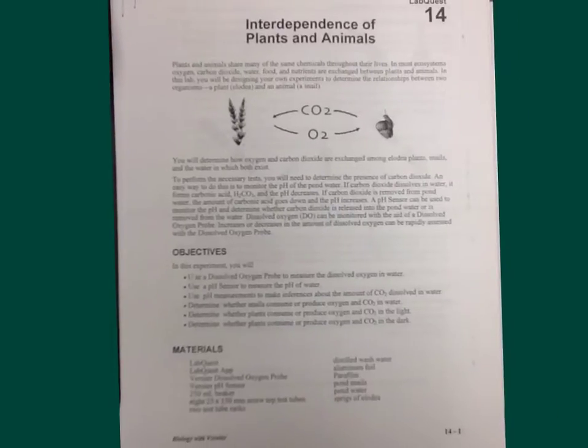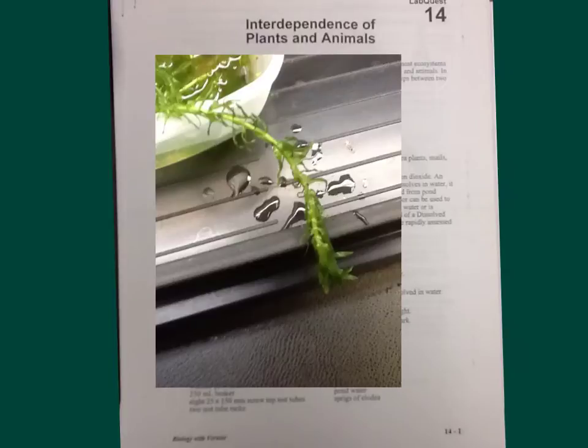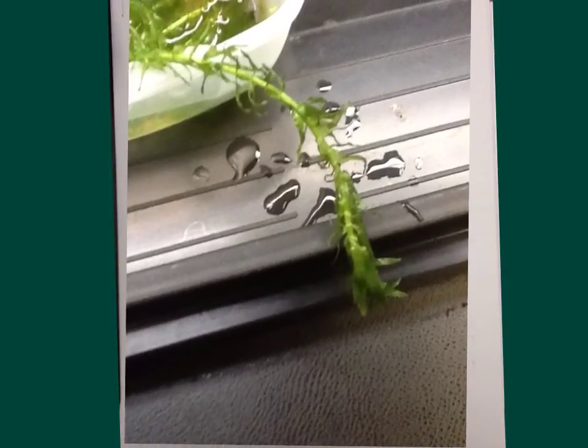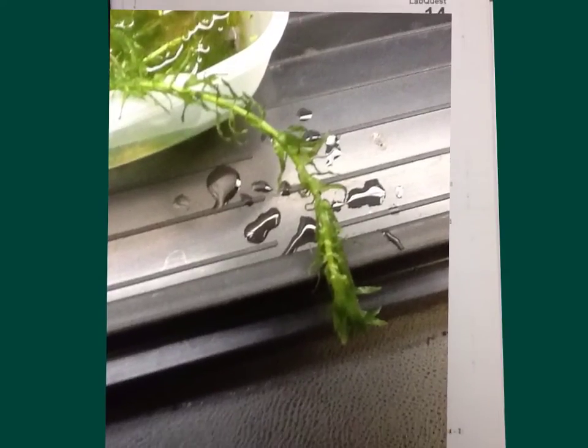And we're going to be working with a plant called Elodea. So this is Elodea. It is also called common waterweed. It's an invasive species. Here, I'll spell it for you. It's on here: Elodea densa.